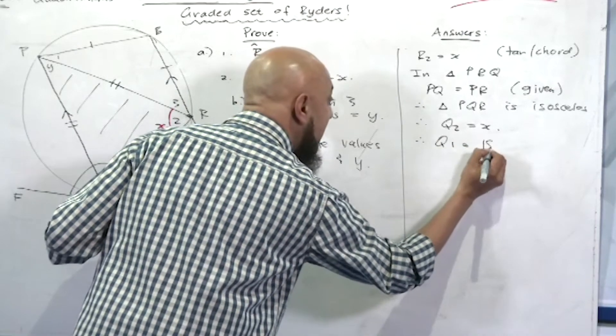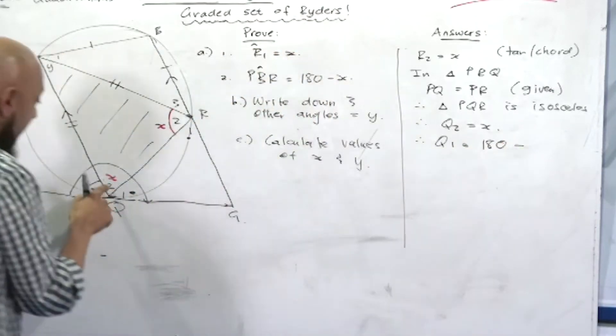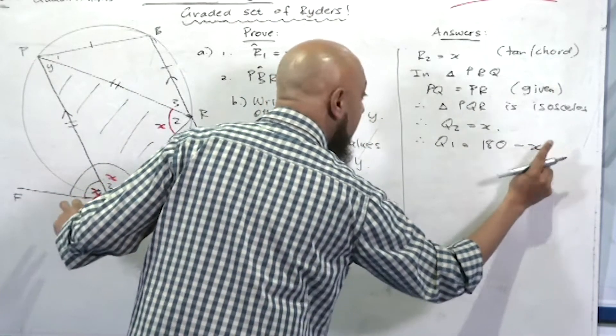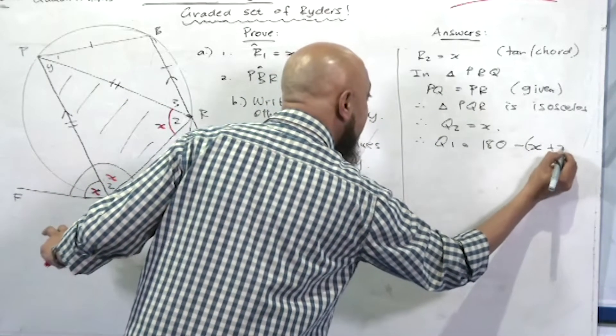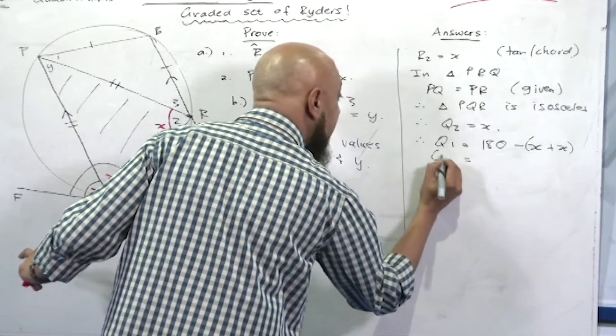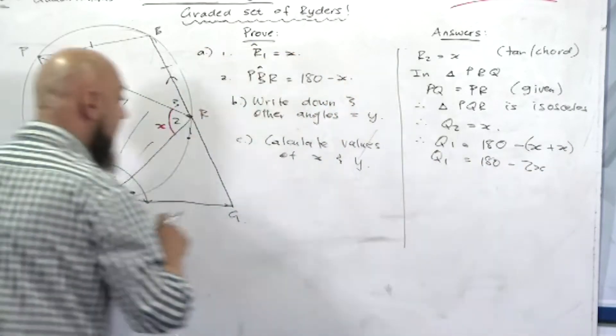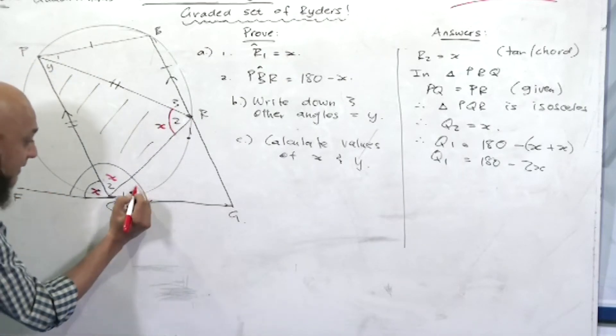Therefore angle q1 is equal to 180 minus x plus x, which is equal to 180 minus 2x. So angle q1 is equal to 180 minus 2x.